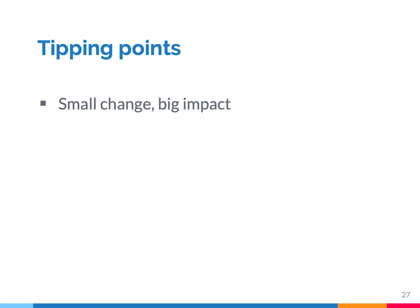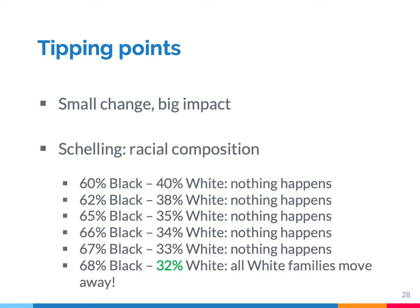Another insight from the Schelling model are so-called tipping points. These are situations in which a small change in the value of a certain variable has a big effect on the collective outcome. In the Schelling model, these tipping points relate to the racial composition of the neighborhood. People will move away if less than one-third of their neighborhood is from their own race. So if a white family lives in a neighborhood with 40% whites and it drops to 38%, nothing happens. But once it falls below that threshold of one-third, everyone will suddenly move away.